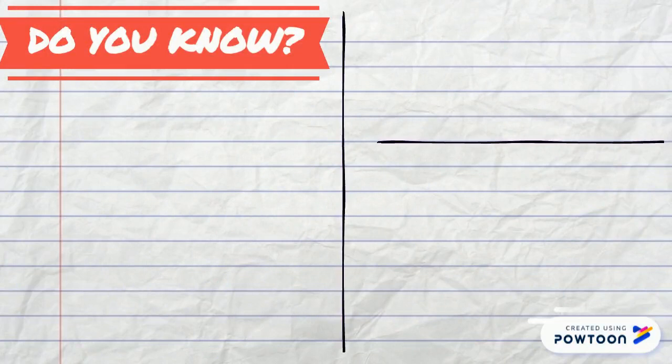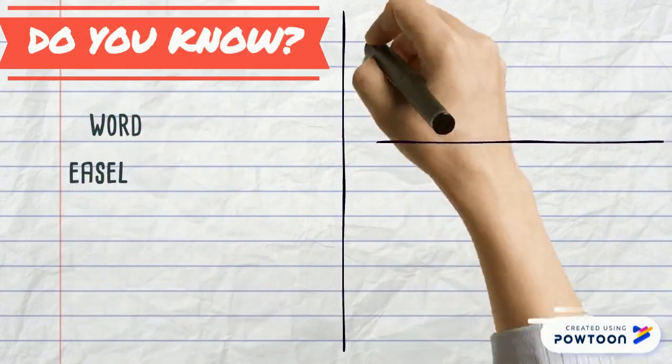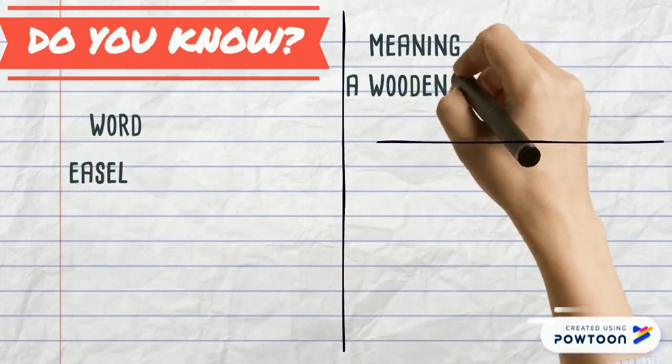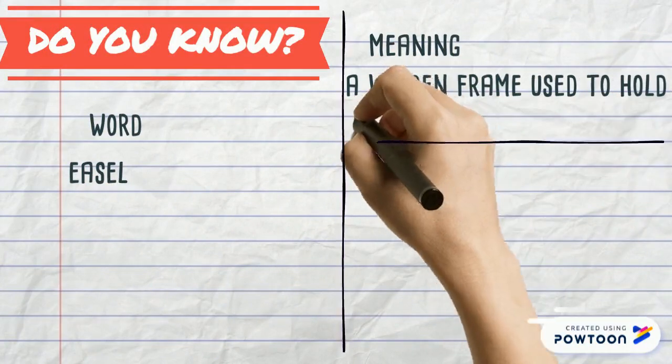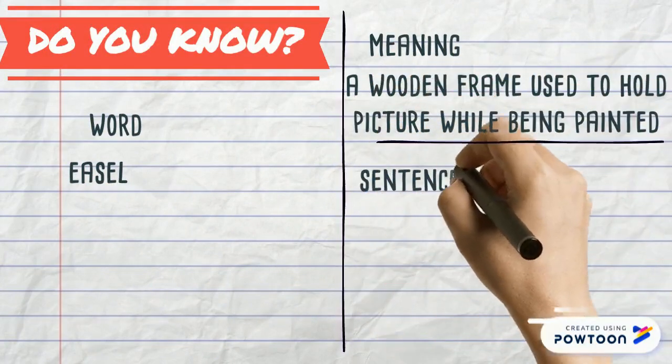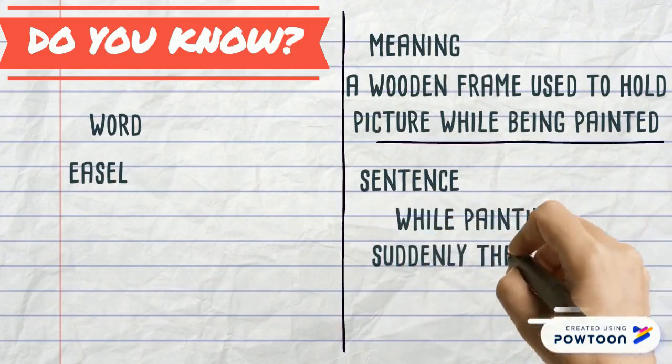The first word is easel. Its meaning is a wooden frame that is used to hold a picture while it is being painted. Sentence is while painting suddenly the easel broke.